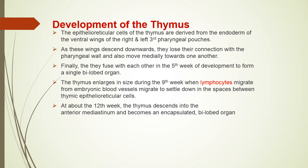The thymus is a bilobed organ present behind the sternum, large in children but gradually becoming smaller with age. Each lobe is derived from the ventral wing of the third pharyngeal pouch of its own side — right lobe from the right third pouch ventral wing, and left lobe from the left third pouch ventral wing. These wings descend downward, lose their connection with the pharyngeal wall, and move medially toward each other, eventually fusing with each other in the fifth week to become a single bilobed organ that keeps descending into the superior mediastinum.